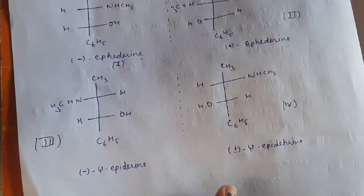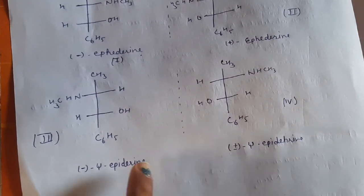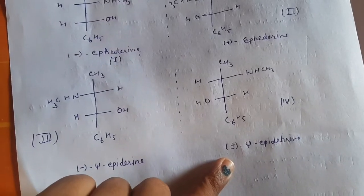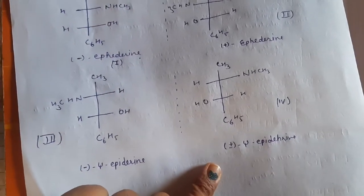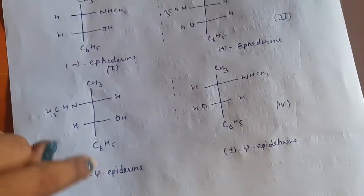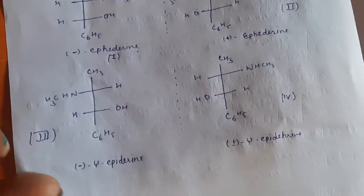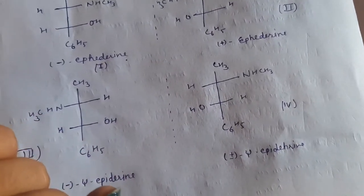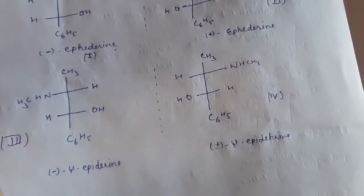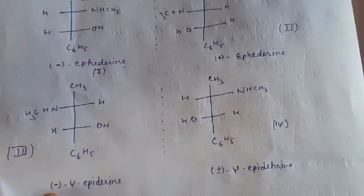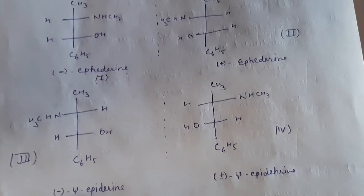Hence third and fourth are also an enantiomeric pair and the relation between first and third, first and fourth they will be diastereomers and similarly second with third and second with fourth also diastereomers. So these are the relationships between these four types of isomers.